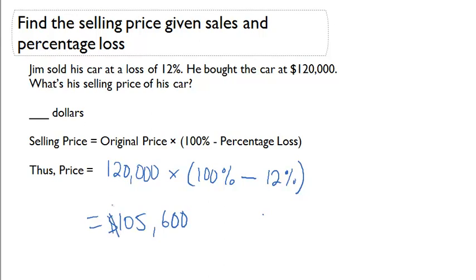So if he bought the car for $120,000 and he sold it at a 12% loss, that means he sold it for $105,600.